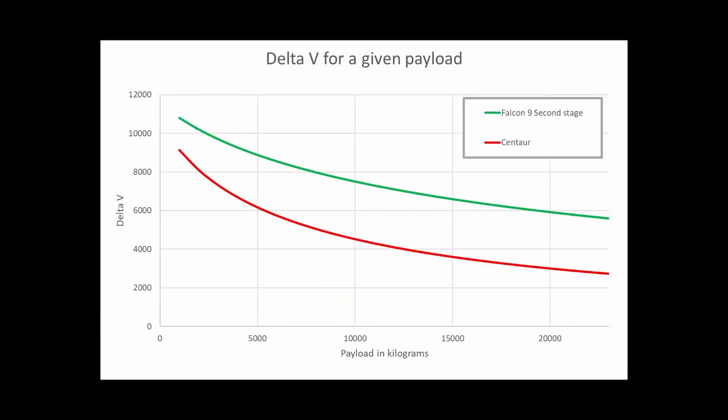Here's another interesting graph, comparing the delta V that both stages can achieve with different payloads. With a 1,000 kg payload, the Falcon 9 second stage is only about 1800 higher in delta V for a given payload. But as the payload mass goes up, the Centaur falls off quickly. Once we get up to 20,000 kg of payload, the Falcon 9 second stage is producing twice the delta V of the Centaur. The Centaur simply cannot overcome the low mass ratio, despite having a specific impulse that is 30% better.